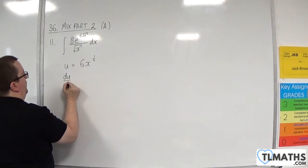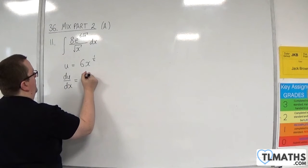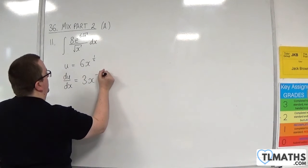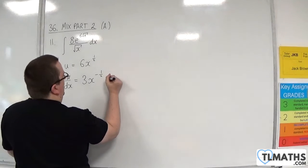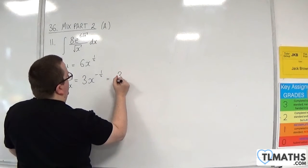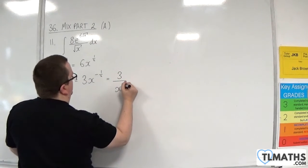You differentiate your substitution, so we would have 3x to the minus a half. I'm going to write that as 3 over x to the half.